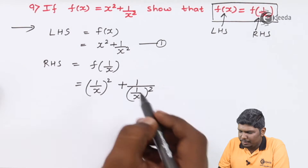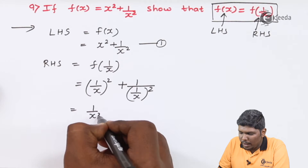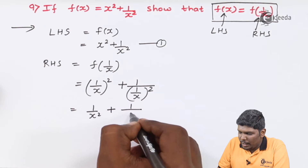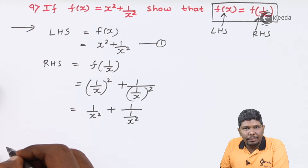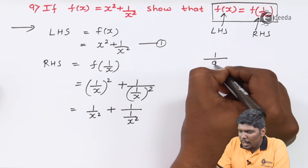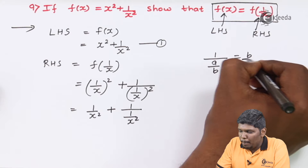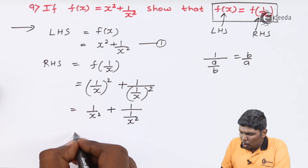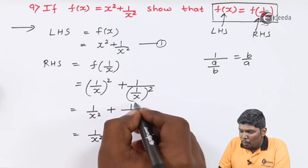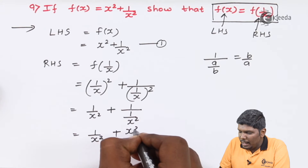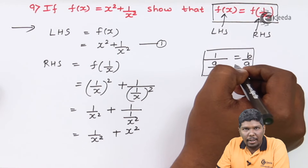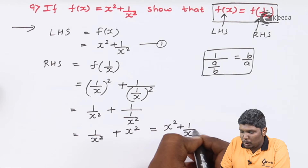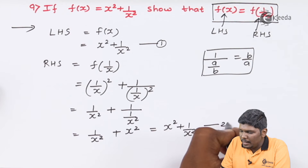Let us solve this equation. So (1/x) squared becomes 1 by x squared. The square is given to both terms, plus 1 upon — this is 1 squared, again 1, and x squared written in the denominator. Now using the property: 1 upon (a/b) can be written as b upon a — if a fraction is written below 1, its answer is the reciprocal. So 1 upon x squared remains as is, but 1 upon (1 upon x squared) becomes directly x squared. So 1 by x squared plus x squared can also be written as x squared plus 1 upon x squared. This is equation number 2.